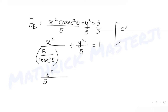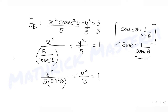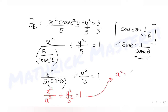Since cosec θ = 1/sin θ, we have 1/cosec²θ = sin²θ. So the ellipse equation becomes x²/(5 sin²θ) + y²/5 = 1. Comparing with the standard form x²/a² + y²/b² = 1, we get a² = 5 sin²θ and b² = 5.